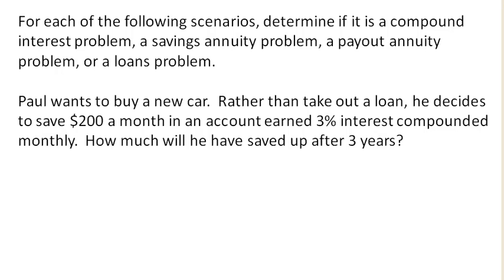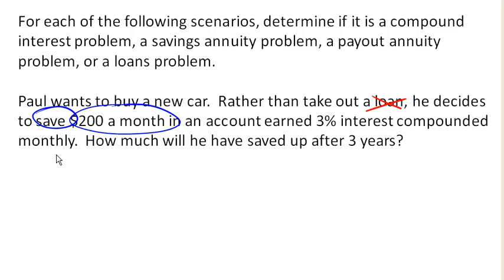Paul wants to buy a new car. Rather than take out a loan, he decides to save $200 a month in an account earning 3% interest, compounded monthly. How much will he have saved up after three years? It's important to notice that he is saving money every month. So this is happening regularly, which means we know it has to be an annuity-type problem. And because he is saving money, the account is going to grow in value — so this is a classic savings annuity problem.